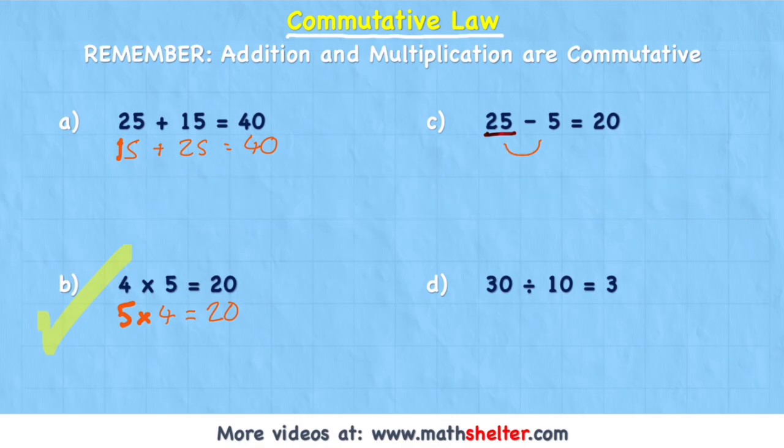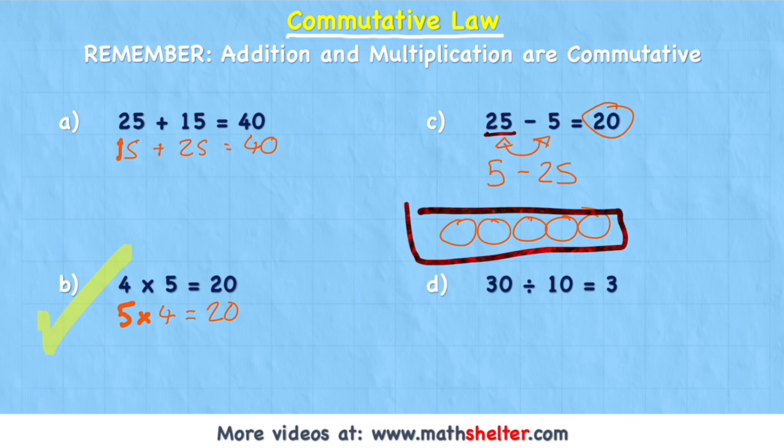However, if I flip these around and I say that I have 5 apples and I'm trying to take away 25, will I still get 20? Well, no, because watch, if I have 1, 2, 3, 4, 5 apples and I try and take away 25, I'm actually going to get into negative numbers because I've got only 5 here I can take away.